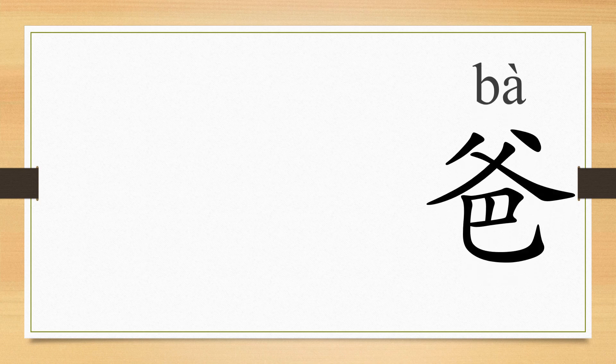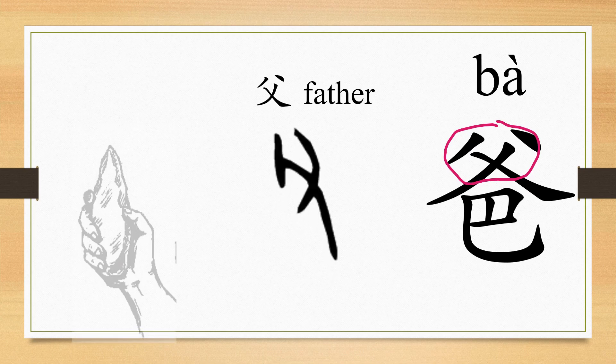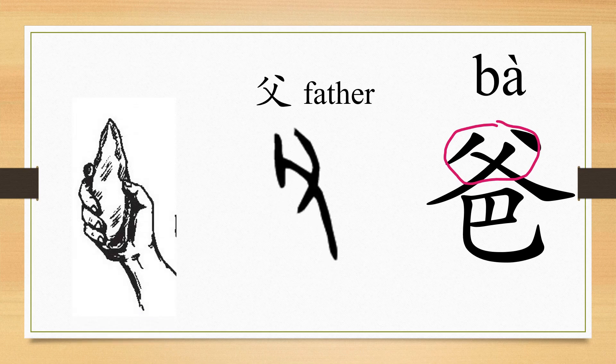First, let's have a look at the character 爸 (Bā). The character 爸 is created on the basis of the character 父 (Fù), which means father. 父 evolves from the image of a person's hands holding a stone axe, indicating he is a person engaging in labor, and that person is the father in one's family in ancient China.